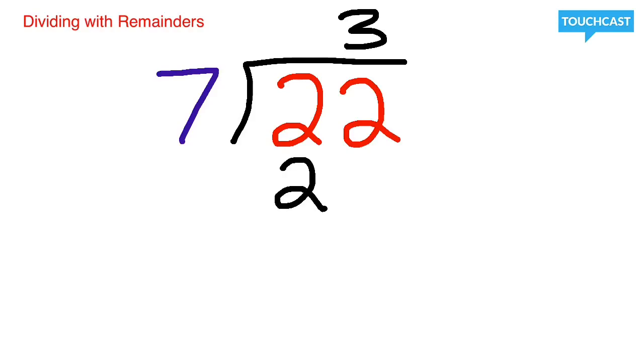I'm going to bring that 21 down and subtract. We know that 2 minus 1 would be 1, and 2 minus 2 is 0.